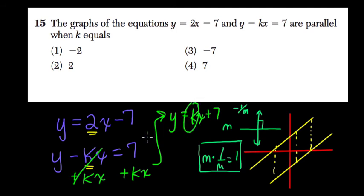And then it's just, well, k has to equal 2. And you can see it, and their slopes would be equal.